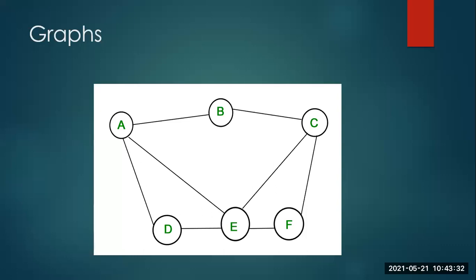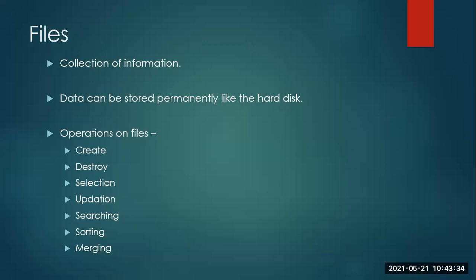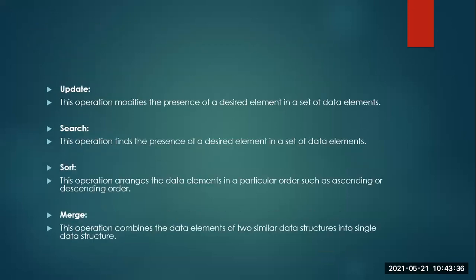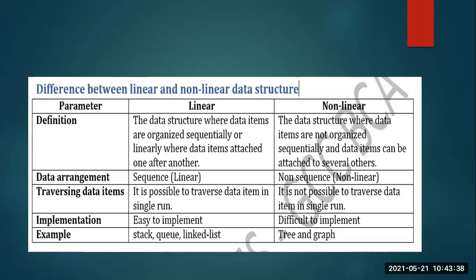That is why they have mentioned the third difference — traversing data items. For linear, it is possible to traverse data items in a single run, that is in a single loop. But in a non-linear, it is not possible to traverse data items in a single run, just as I showed you now for that one particular graph. This is the difference between a linear and a non-linear data structure.